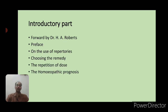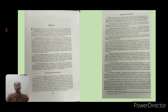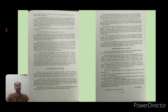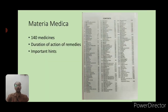The introductory part contains a foreword by Dr. H.A. Roberts, then the preface, followed by topics on the use of the repertory, choosing the remedy, repetition of doses, and homeopathic prognosis. Another unique feature of this repertory is the materia medica section, which contains 140 medicines starting from Aconite and ending with Zincum metallicum, with additional explanation of duration of action of remedies and important hints regarding medicine and prescription.